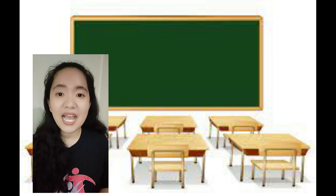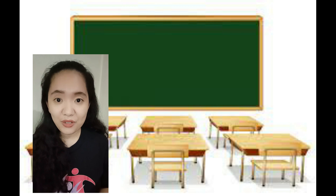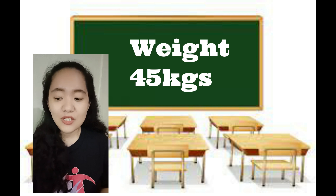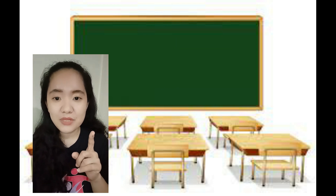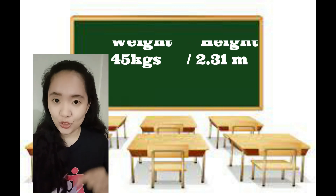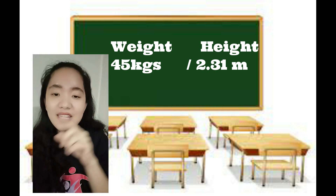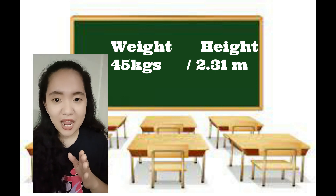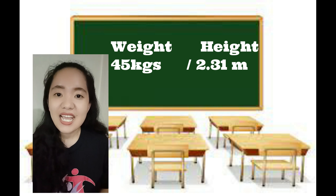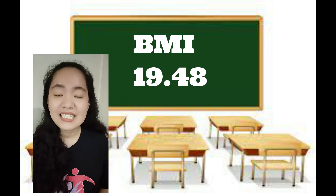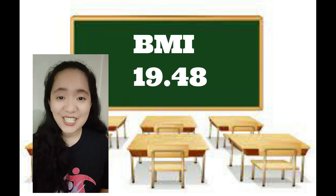Now we have a sample weight. Say for example, your weight is 45 kilograms. So what are you going to do now? This is how you are going to get your BMI: 45 kilograms divided by 2.31 — that is your weight divided by your height squared. 45 divided by 2.31 equals 19.48. That is your BMI.